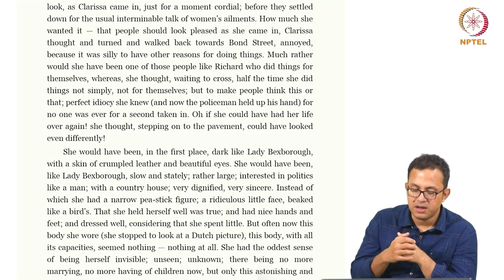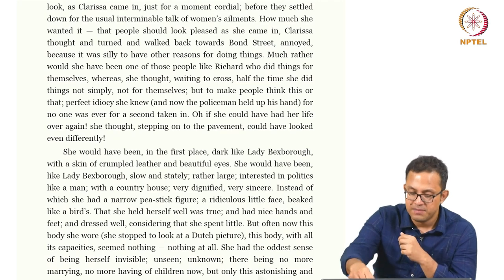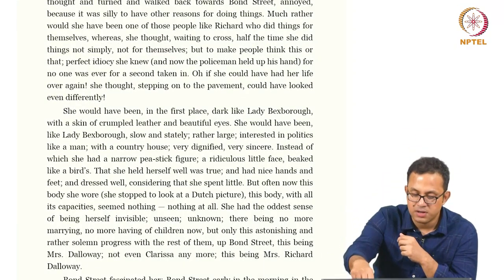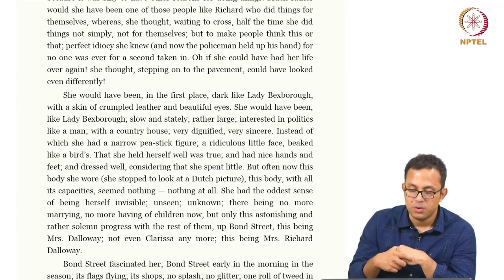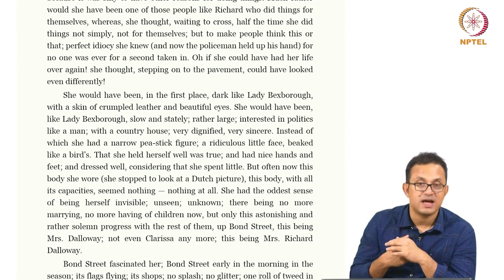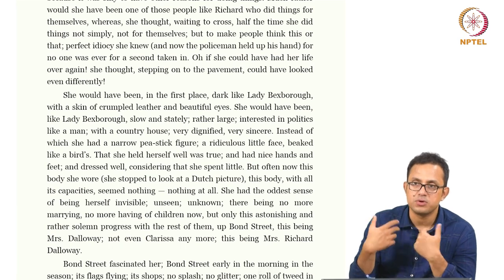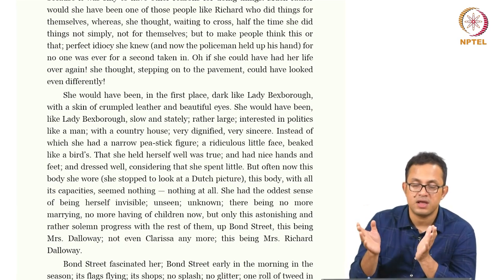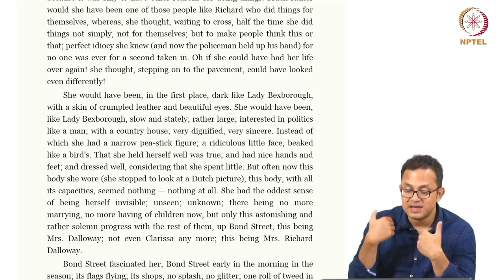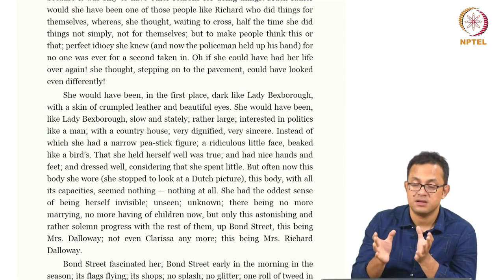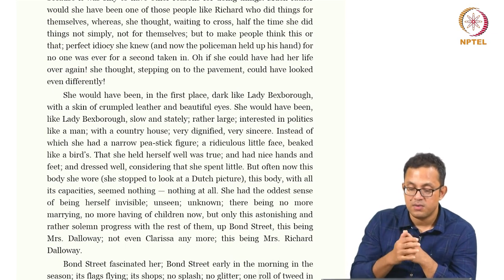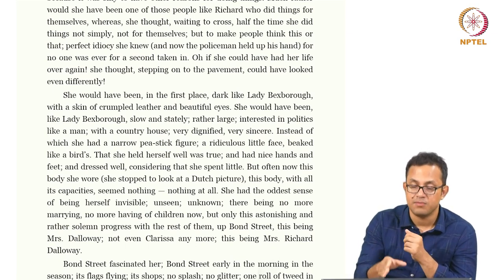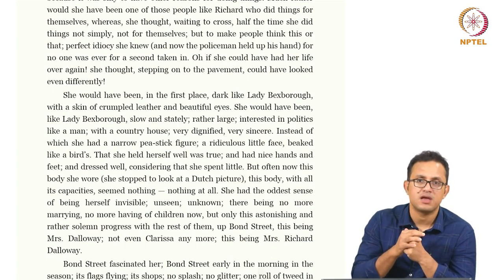'She had the oddest sense of being herself invisible, unseen, unknown — there being no more marrying, no more having children now, but only this astonishing and rather solemn progress with the rest of them, up Bond Street — this being Mrs. Dalloway, not even Clarissa anymore, this being Mrs. Richard Dalloway.' Again the whole idea of feminine identity is portrayed here — there is no Clarissa left; her entire identity has been consumed by her husband's identity, Mrs. Richard Dalloway. That becomes the be-all and end-all of her life at this moment. I stop here today and will continue with this text in the next lectures. Thank you for your attention.